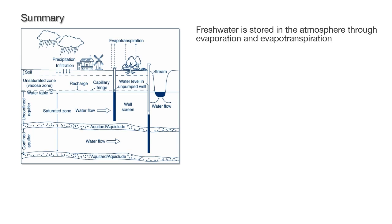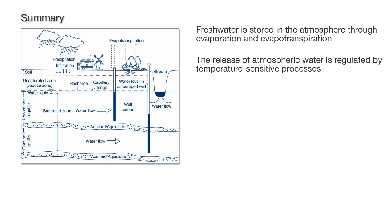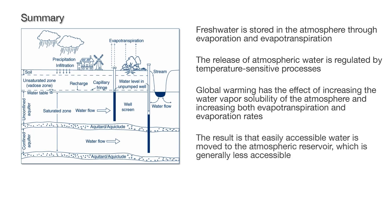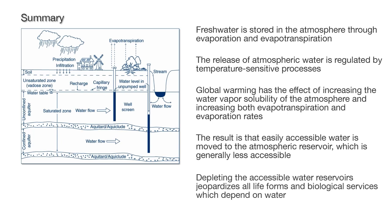Fresh water is stored in the atmosphere through evaporation and evapotranspiration, and its release is regulated by temperature-sensitive processes. Global warming increases the water vapor solubility of the atmosphere and raises both evapotranspiration and evaporation rates. The result is that easily accessible water is moved to the atmospheric reservoir, which is generally less accessible. Depleting the accessible water reservoirs jeopardizes all life forms and the biological services which depend on water.